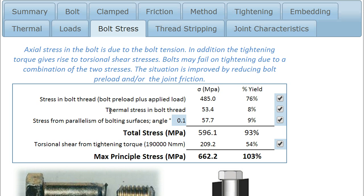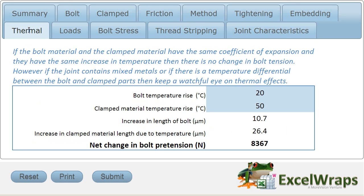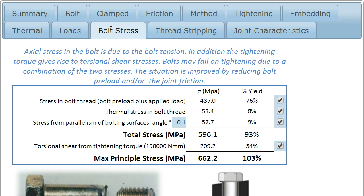In this particular example, we've also got a thermal stress. If we go back to our thermal stress, this is arising because the bolt temperature and the clamp material temperature have a differential, and it's resulting in an 8.3 kN increase in bolt tension, which is expressed here in this stress.